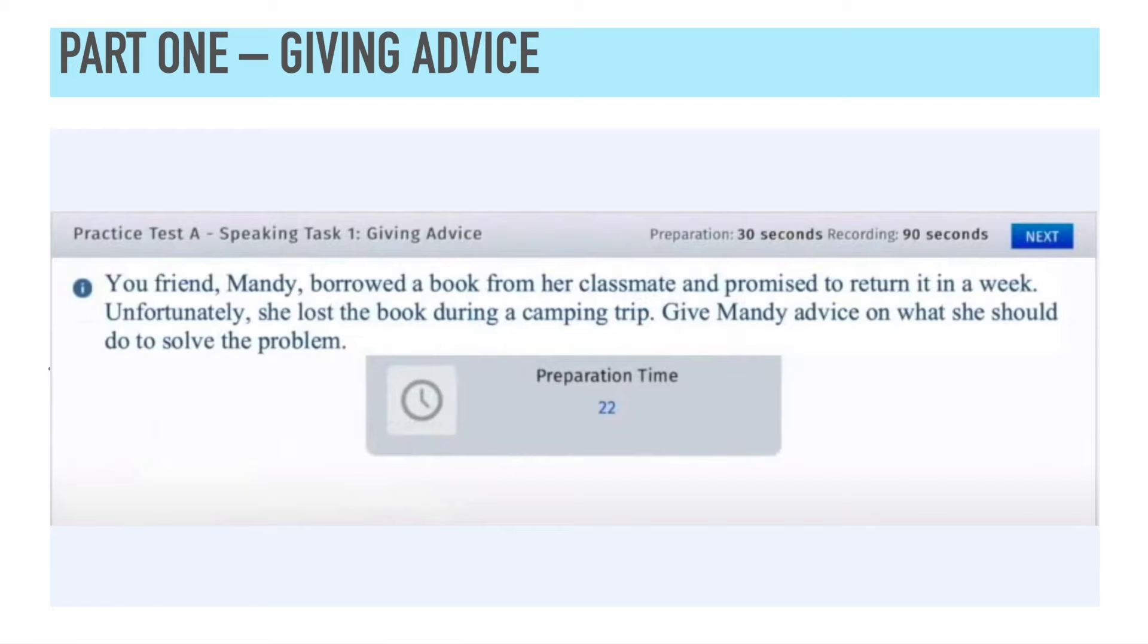Part one is called giving advice, and you're going to be doing exactly that. You will always be presented with a scenario in which you are supposed to give some sort of advice to someone. Now, first thing you got to remember is, sometimes the question just says, give advice. Sometimes it says, give advice on what they should and should not do. So, that's something that I want you to be paying attention to. For this task, you have 30 seconds to prepare, and you have to speak for 90 seconds. Let's look at this sample question together. Your friend Mandy borrowed a book from her classmate and promised to return it in a week. Unfortunately, she lost the book during a camping trip. Give Mandy advice on what she should do to solve the problem. So, as you can see, the question doesn't say what she should not do, and only focuses on what Mandy should do.